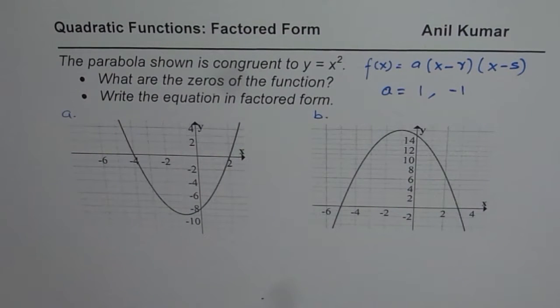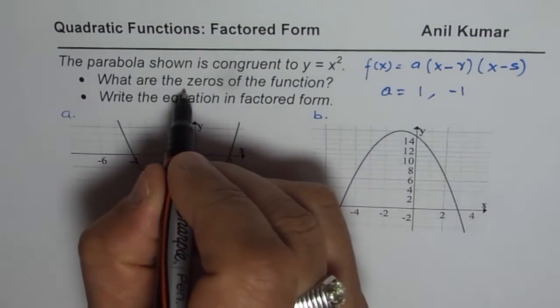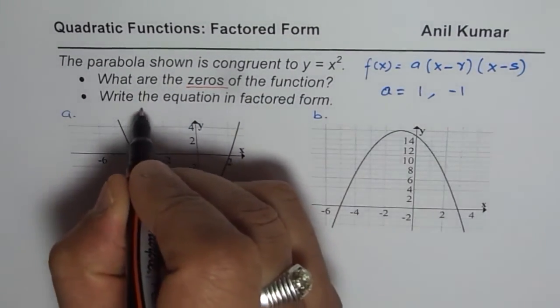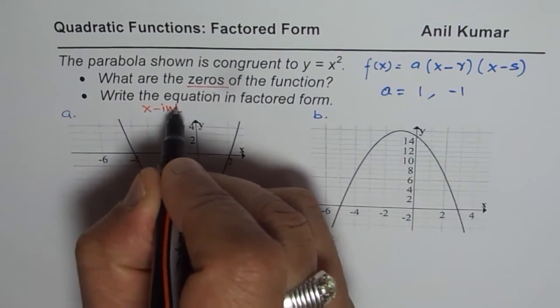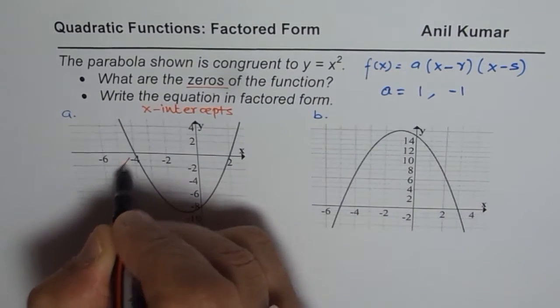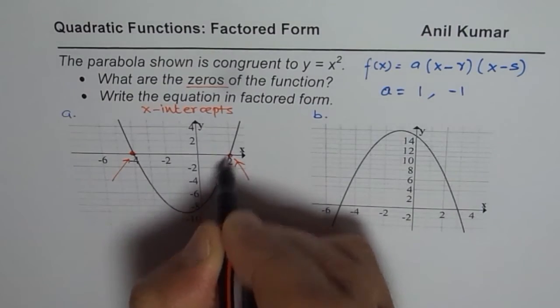You can still pause the video, answer your question and then look into my suggestion. So let's begin by reading the zeros from the graph. When I say zeros from the graph, we are looking at x intercepts. So x intercepts are zeros. So these are the two zeros on the first graph. Let me mark them very clearly.